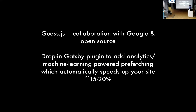Another really cool optimization: we've been collaborating with Google and others in open source on a Gatsby plugin that integrates with guess.js, a machine learning package that takes your Google Analytics data and figures out, if the user is on page X, which pages they're most likely to visit from there. The Gatsby plugin uses that information to automatically start prefetching those pages. If 80% of visitors then click on the next thing, the resources for that page are already in the browser cache by the time the user clicks it. Things like this can really improve the perceived speed of your site.